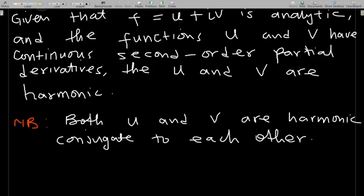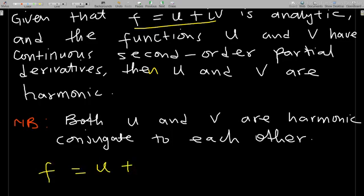Given that a function f equals u plus iv in complex analysis is analytic, and the functions u and v have continuous second-order partial derivatives — in other words the second-order partial derivatives exist and are continuous — then u and v are harmonic. So if I have f equal to u plus iv and f is analytic,